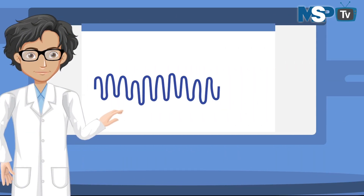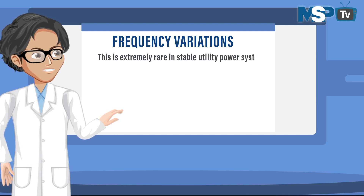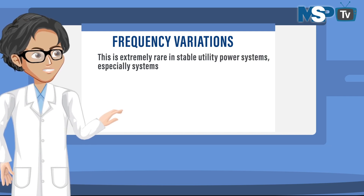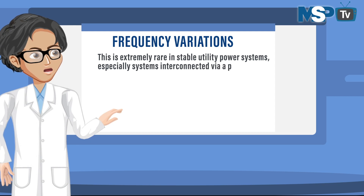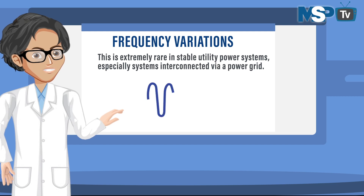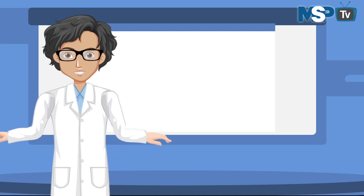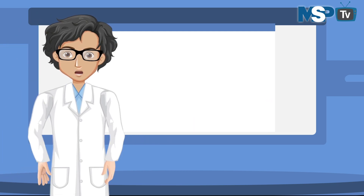The last type of power problem is frequency variation. This is extremely rare in stable utility power systems, especially systems interconnected via a power grid. However, for sites that have dedicated standby generators or poor infrastructure, frequency variation is more common — especially if the generator is heavily loaded. IT equipment is generally frequency-tolerant and not affected by minor shifts in the local generator frequency. So these are the most common power problems — I hope I have provided some valuable information.